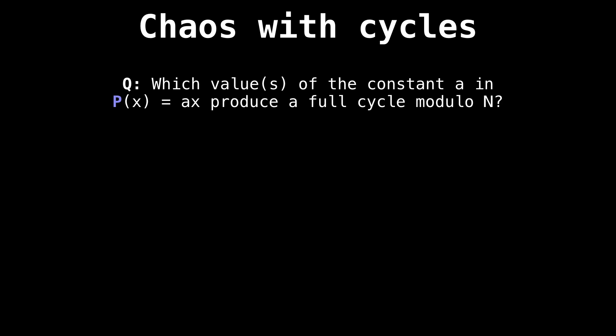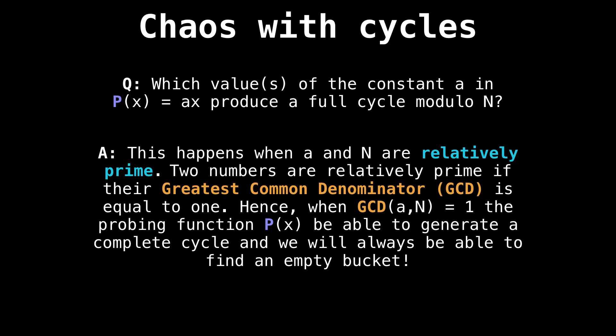We cannot get stuck in this situation ever. So how do we avoid it? Which values of the constant a in P(x) equals ax produce a full cycle modulo N? It turns out that this happens when the constant a and N the table size are relatively prime to each other. Two numbers are relatively prime if their greatest common denominator is equal to one. That is, a and N have a GCD of one. When that happens, the probing function will always be able to generate a complete cycle, and we will always be able to find an empty bucket.